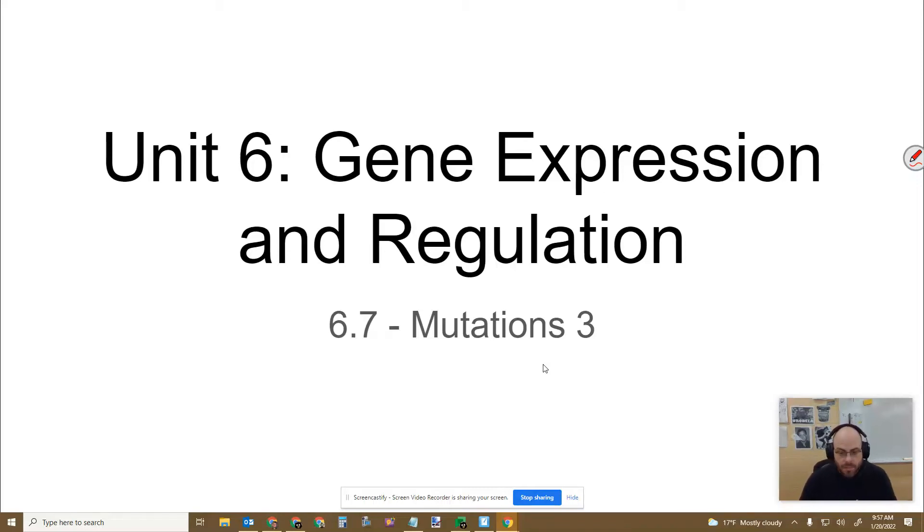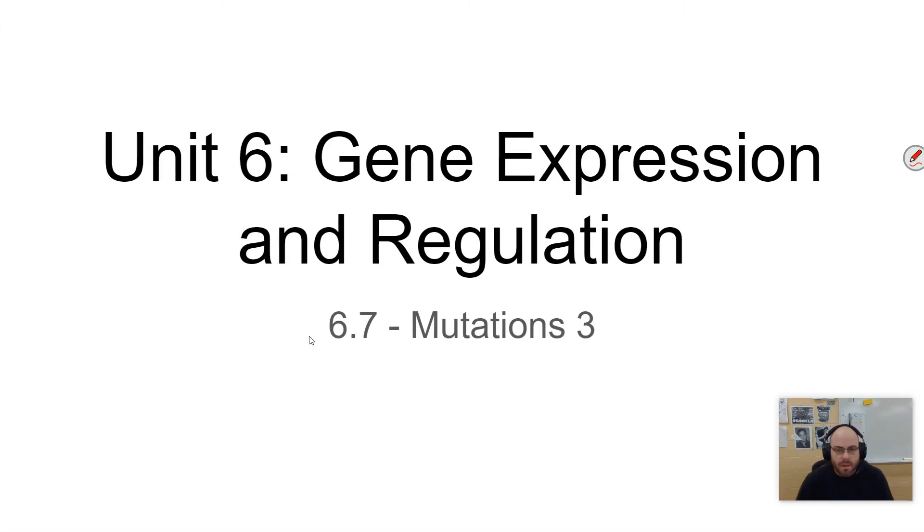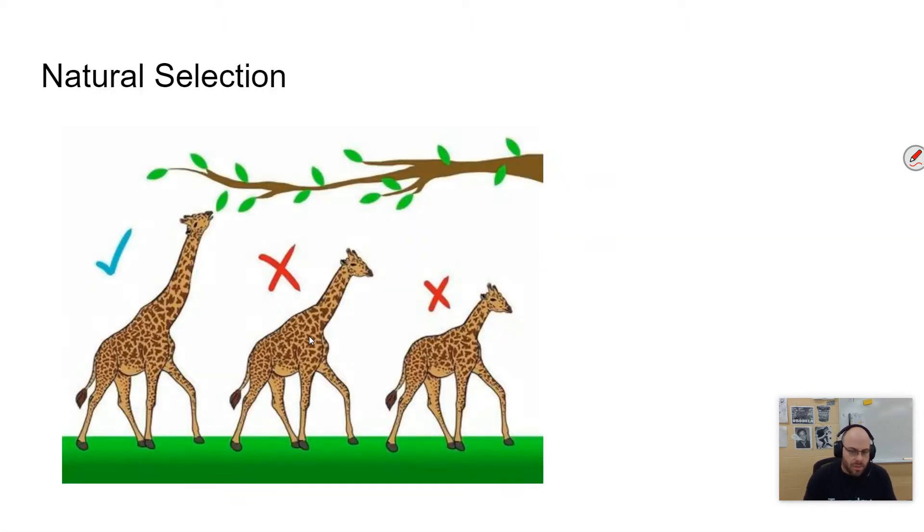All right, in this video we're going to be looking at mutations again for one last time. We're going to talk about how natural selection acts on mutations, and then we're going to look at what's called horizontal genetic variation, or horizontal acquisition of genetic information.